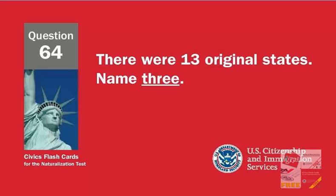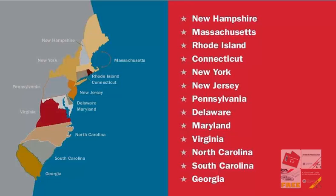There were 13 original states. Name three. New Hampshire. Rhode Island. Connecticut. New York. New Jersey. Pennsylvania. Delaware. Maryland. Virginia. North Carolina. South Carolina. Georgia.